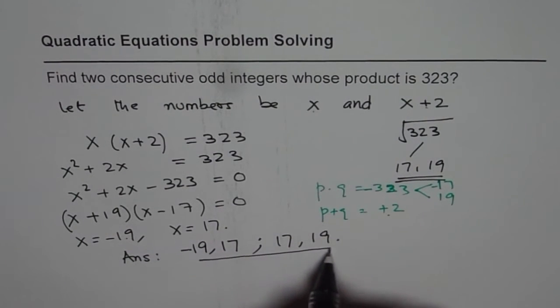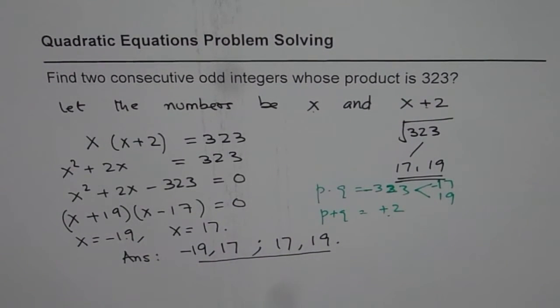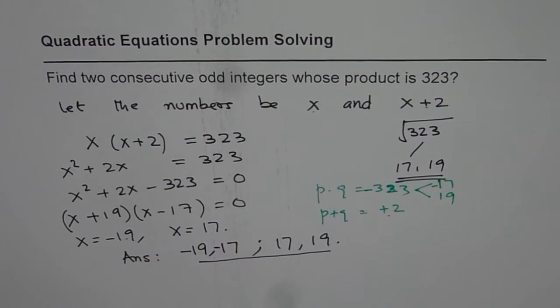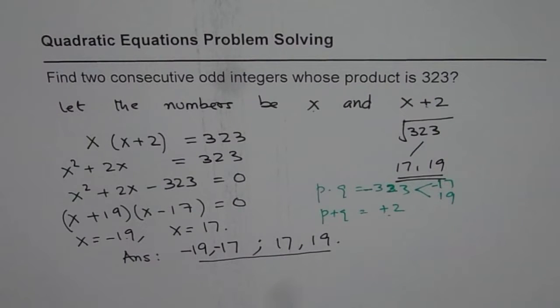So these two are the answers. So minus 19, minus 17 or 17, 19 are consecutive odd integers whose product is 323.